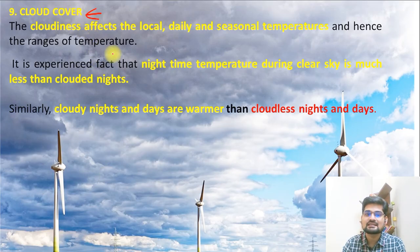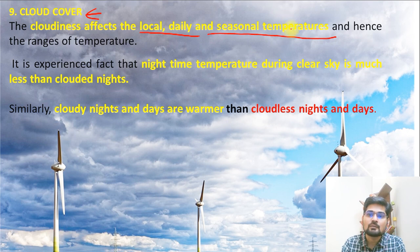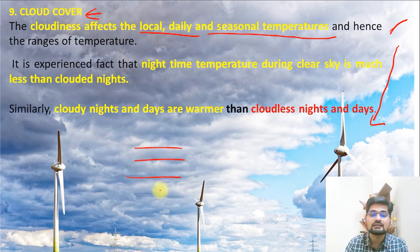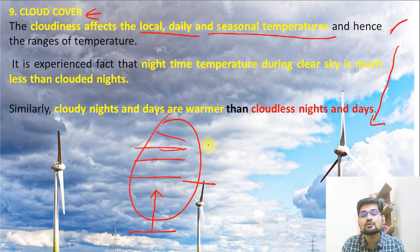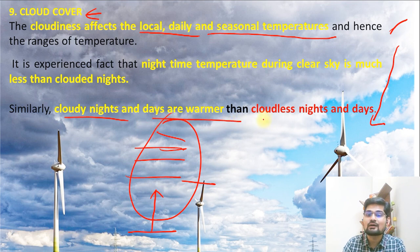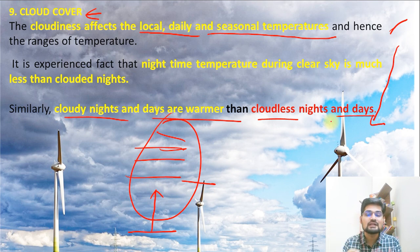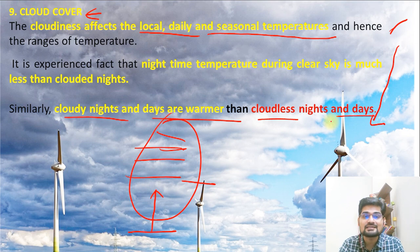Cloud cover is another factor. Clouds do not permit insolation to pass through and reflect energy back. However, in cloudy conditions, the long-wave radiation emitted by the earth is trapped between the surface and the cloud layer, leading to warmer days and nights. Cloudy nights and days are warmer, while cloudless nights and days are cooler. Cloud cover thus causes important fluctuations in temperature distribution on local, daily, and seasonal bases.